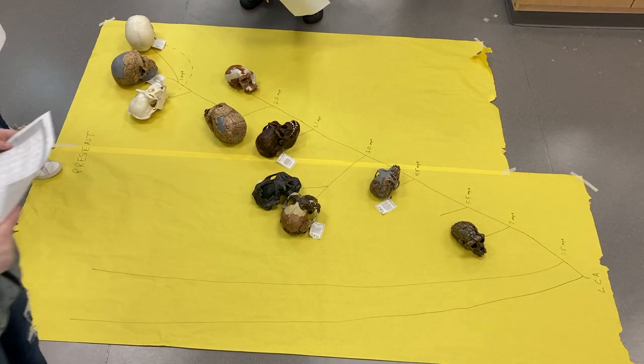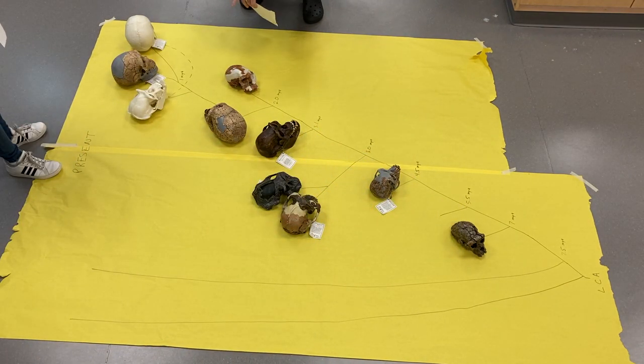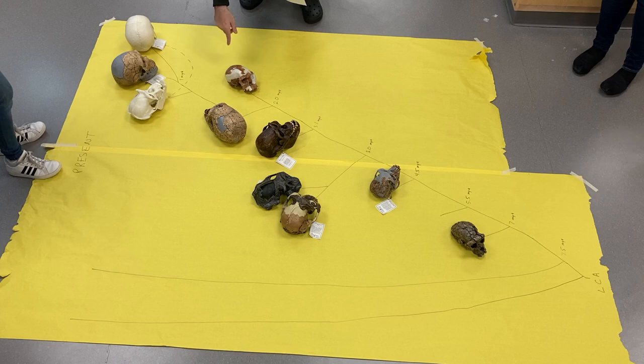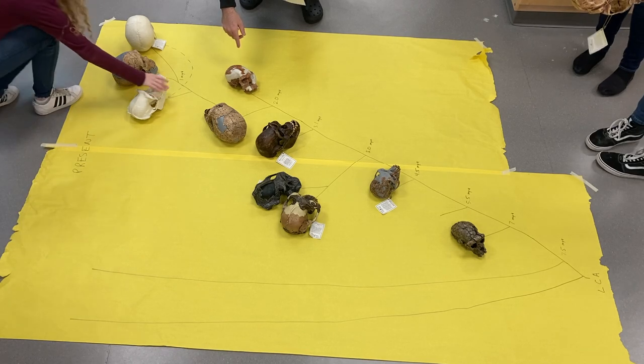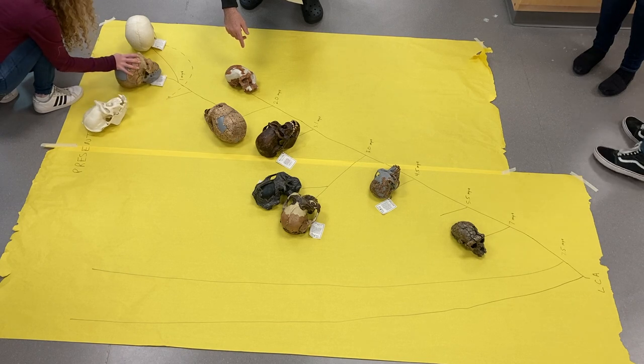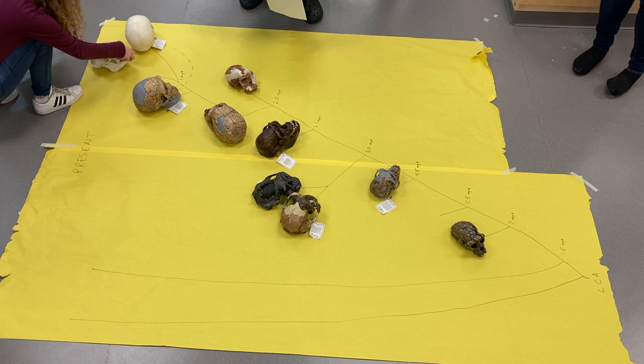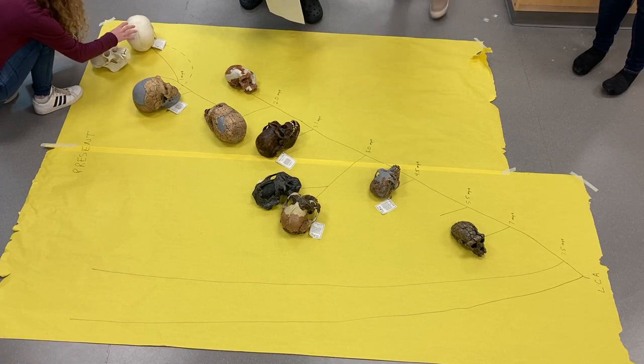So to answer your question, John, the 3.0 and the 3.1 are like, they really should be right next to each other. I just spaced it out so that I could get them in there. They're essentially the same time. How do you know which one of these two? Yeah, so take a look there. Look at the differences just in the skulls themselves.